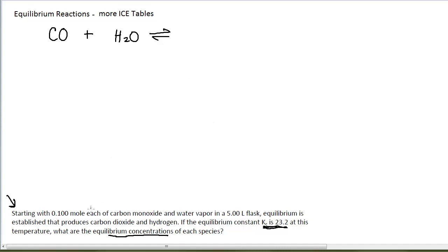They're telling us that this produces carbon dioxide and hydrogen. So CO2 plus H2. You want to make sure that it's balanced, right? Number of carbons, oxygens, and hydrogens on both sides. And it looks like it is. Two oxygens, two hydrogens, one carbon.